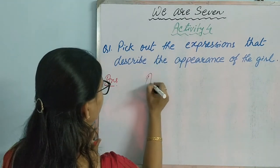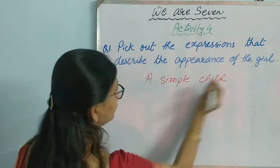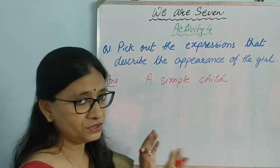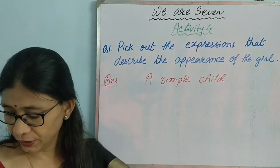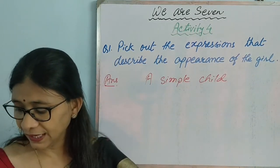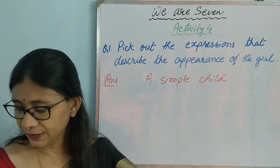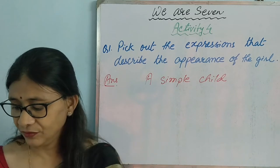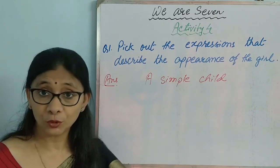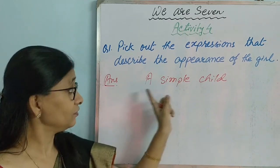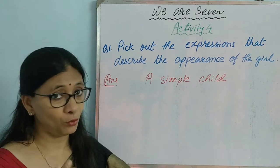The first line is: 'A simple child, that lightly draws its breath and feels its life in every limb, what should it know of death?' So the first stanza gives us 'a simple child' as part of the appearance description.